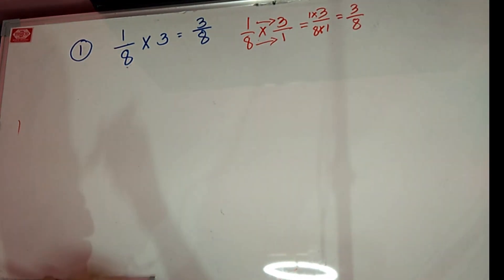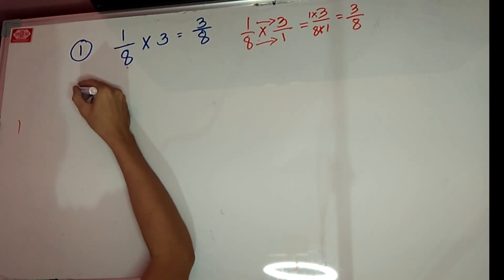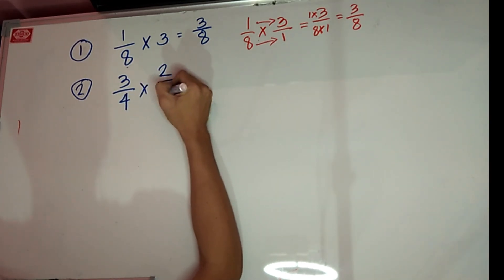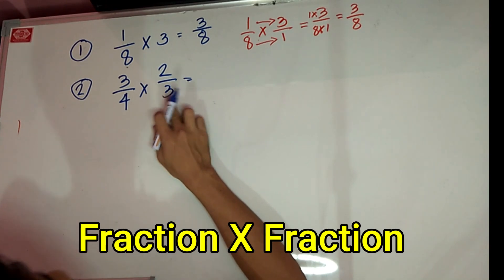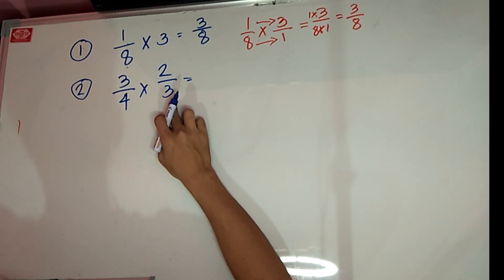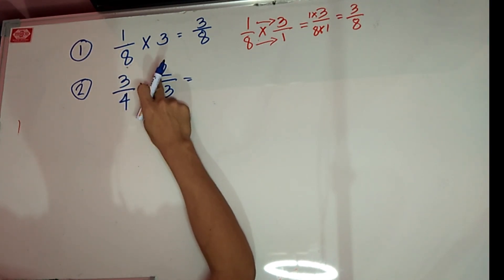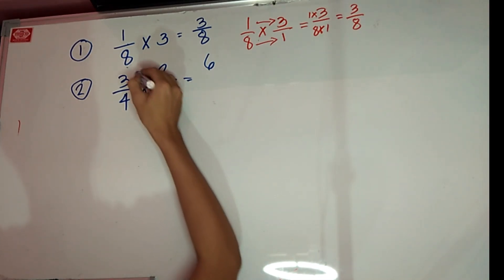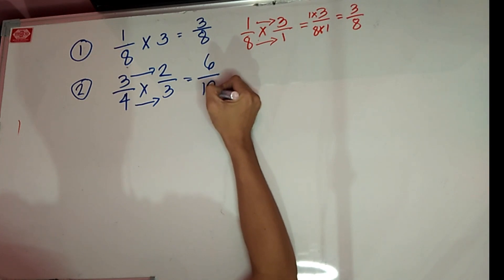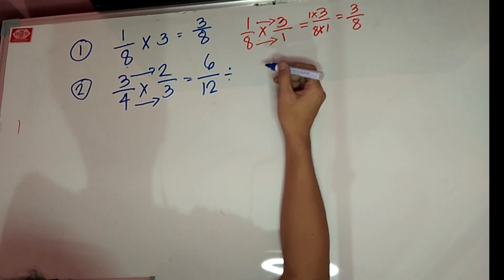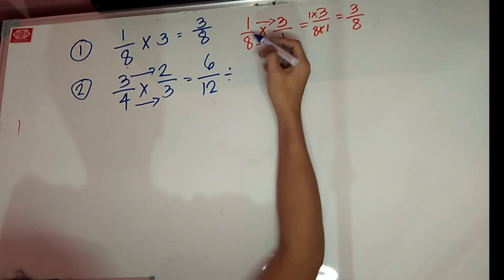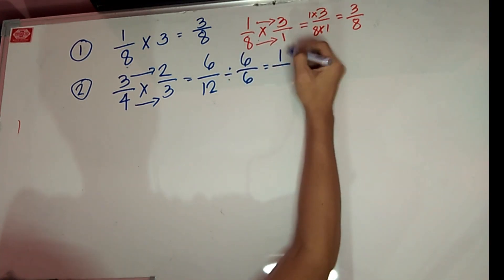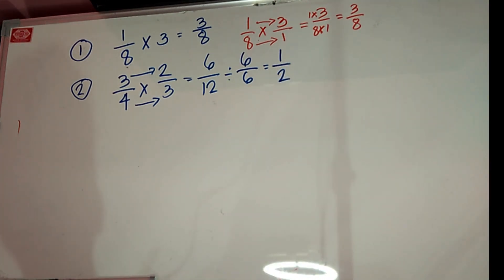Number 2 example: 3/4 times 2/3. This is a fraction multiplied by a fraction. Just simply multiply numerator times numerator — that is 6 — and denominator times denominator — that is 12. After that, reduce always to lowest term. The greatest common factor is 6. Six divided by 6 is 1, 12 divided by 6 is 2. So the answer is 1 half.